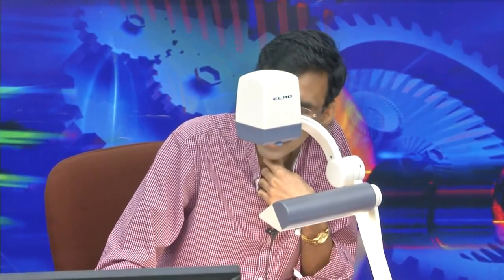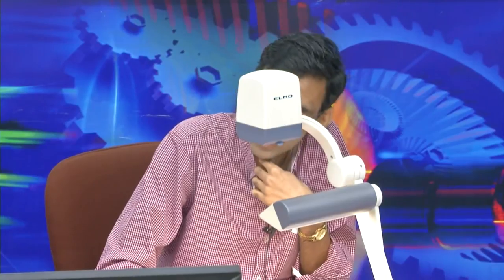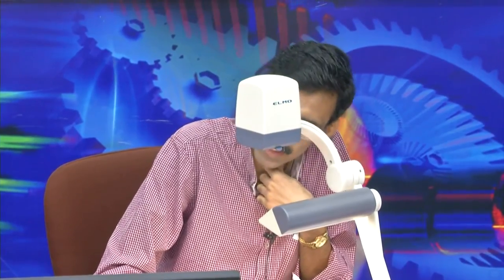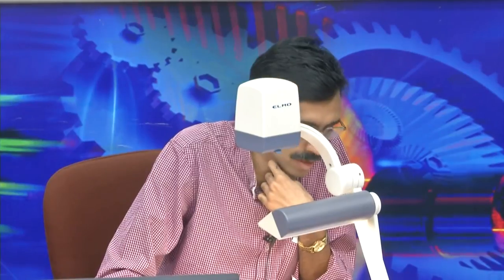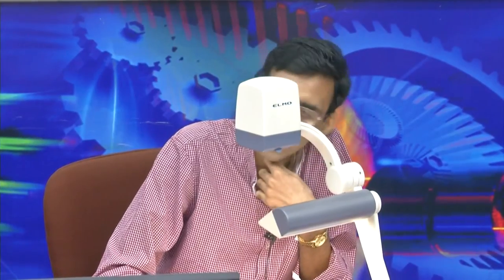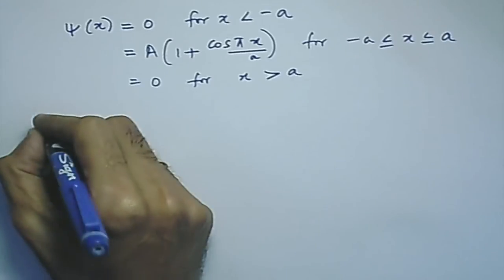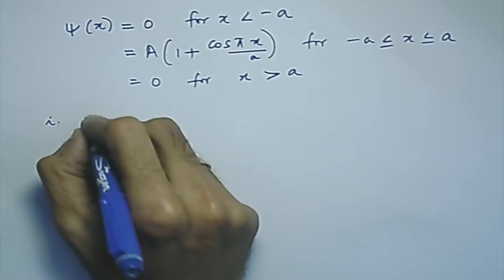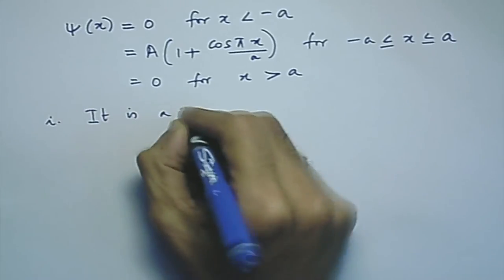You would have seen what is meant by a well-behaved wave function. The first thing is that it must be square integrable, because the integral of the square gives the probability density, which is very important. It also has to be single valued, continuous, and the first derivative must also be continuous, so that it fits into the Schrödinger equation. You can see all these conditions are satisfied, and hence the first part — whether it is well-behaved or not — yes, it is a well-behaved wave function.